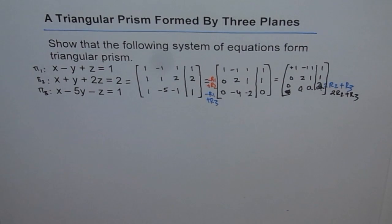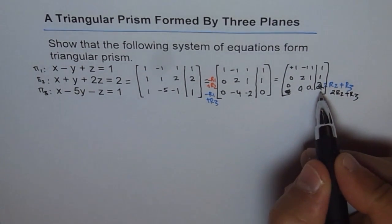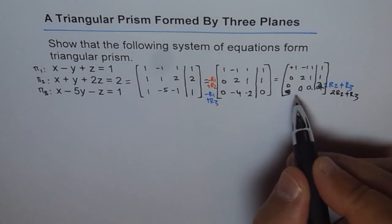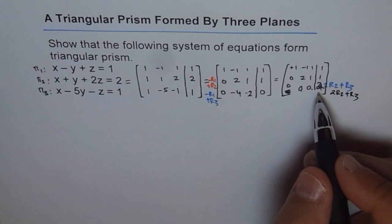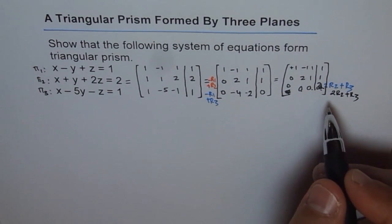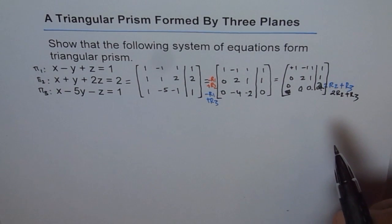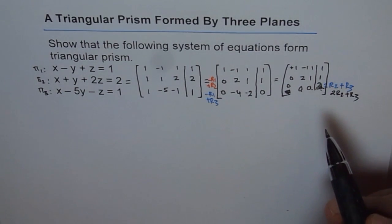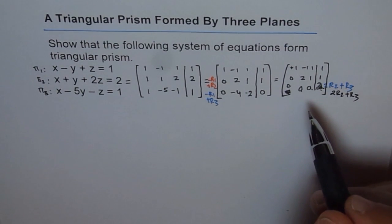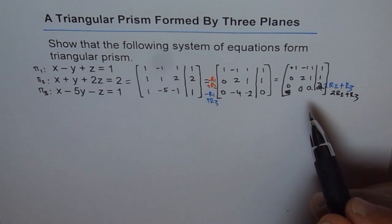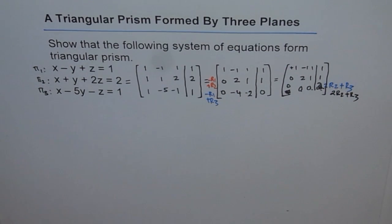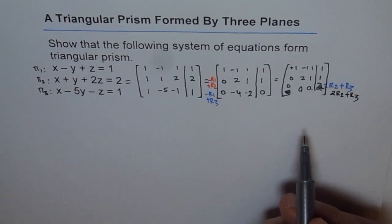This clearly indicates that 0 cannot equal 2, and therefore there is no solution. This system of equations has no solution. However, the important thing is that none of the planes are parallel, and therefore they form a prism.